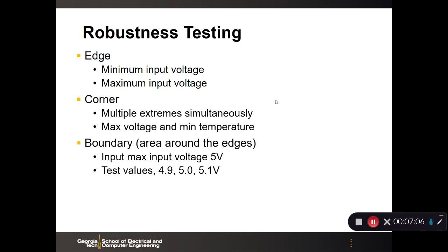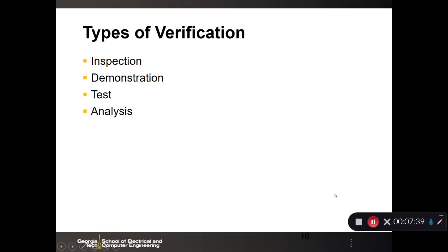And then lastly, boundary testing. So, you want to test the area around the edges. So, let's say your input voltage is 5 volts and that's your max. You want to test values right up to it, say at 4.9, right exactly at 5, and then you want to go maybe a little over the edge or over that boundary, and you want to test at 5.1. You don't want to kill it, but you just want to see what would happen if there was a glitch on that 5-volt line. Would your system still be robust enough to handle that glitch? And that's important. And I'll stop here, and we'll wait for the third video.